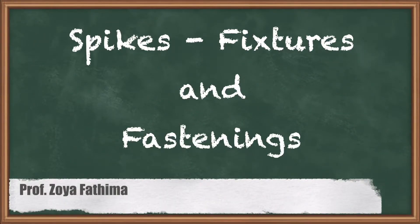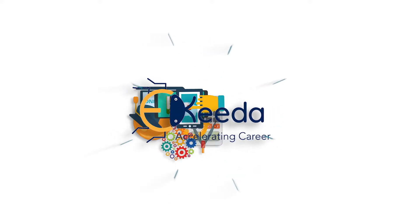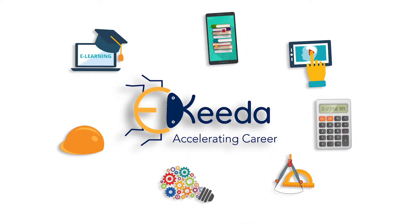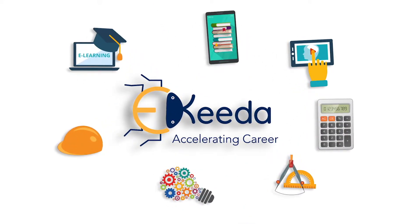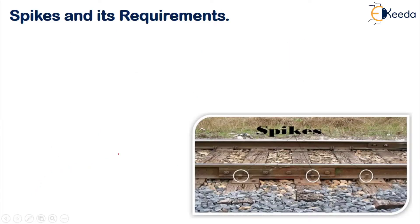Hello students, in this lesson we'll study about spikes. Let us see what a spike is and what the requirements of a spike are. This is generally used for fixing the rails, bearing plates and chairs to the wooden sleepers. Whether it is rails or chairs or bearing plates, in order to fix all this to the sleepers, we use a fastening called a spike.